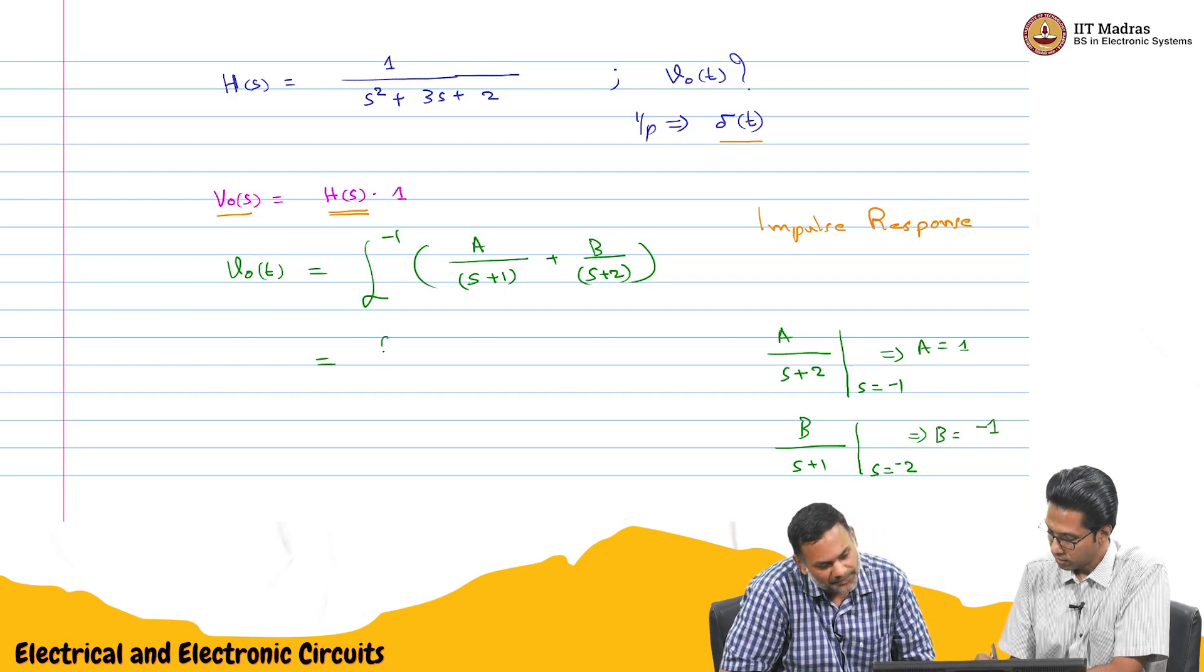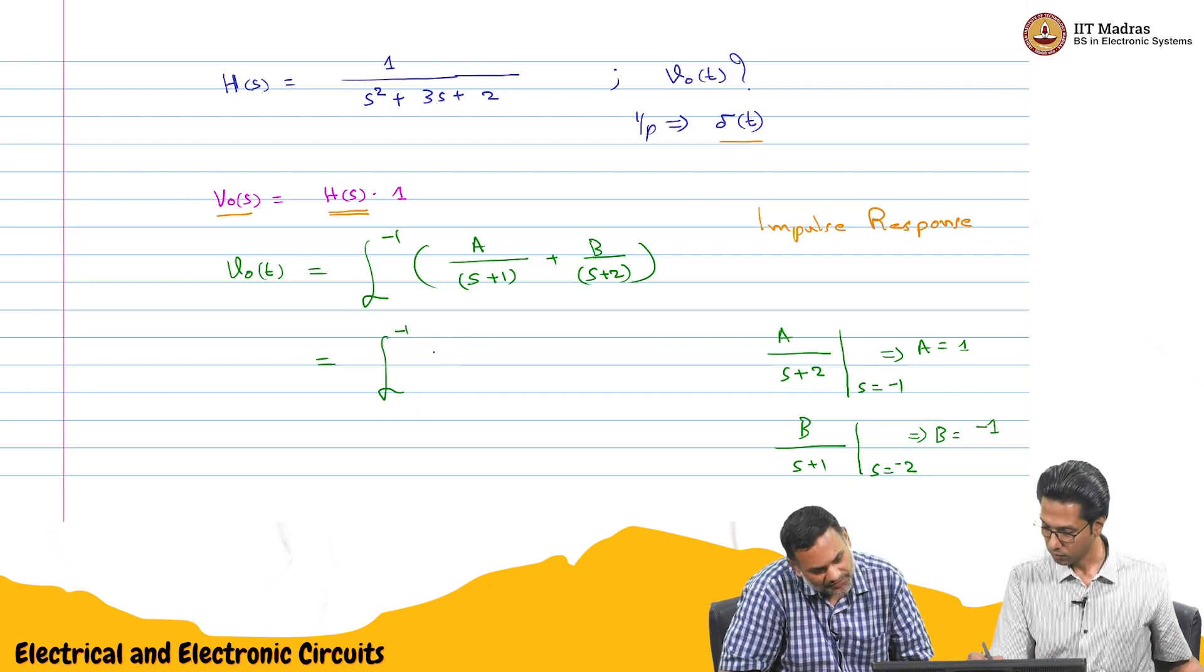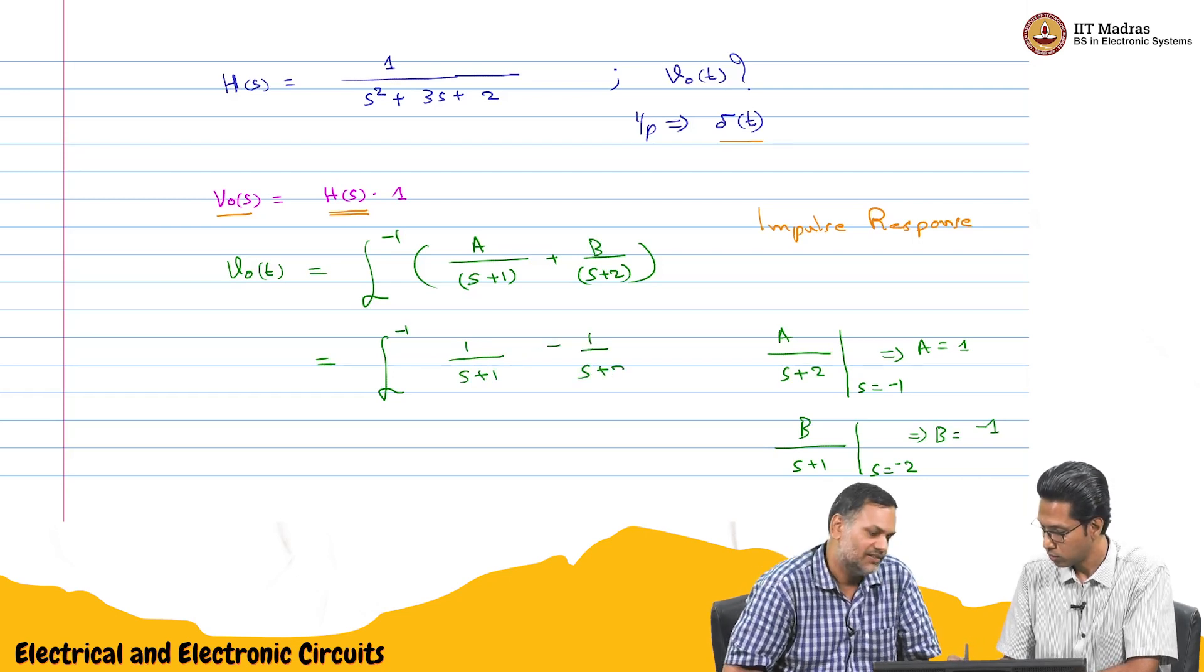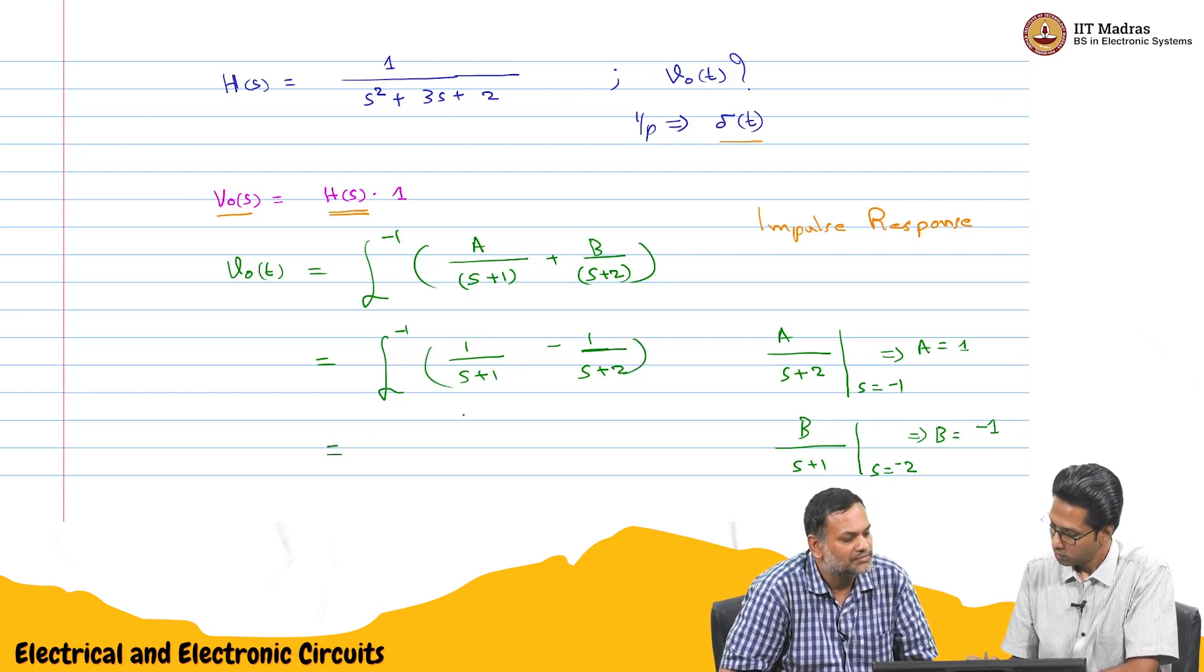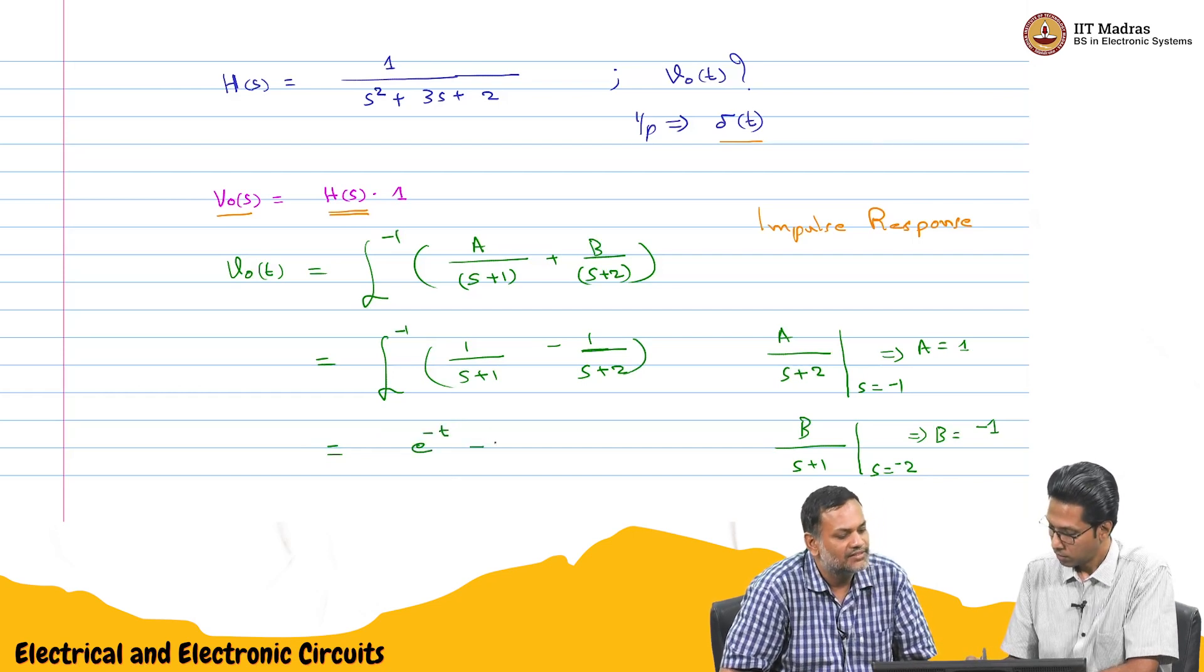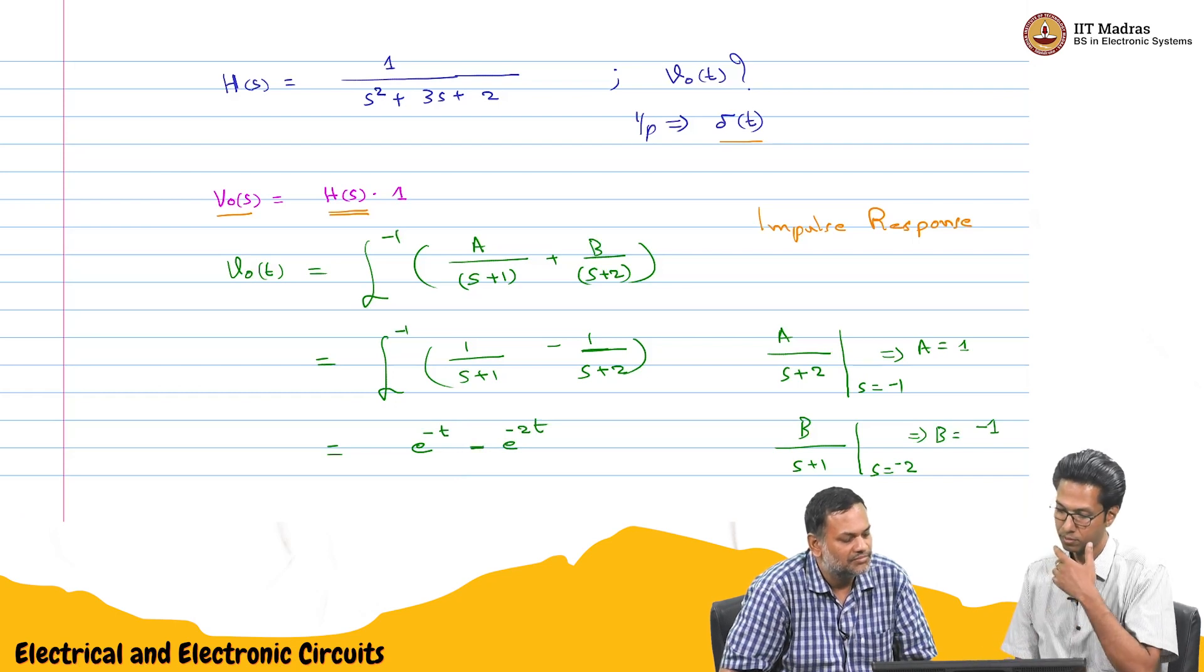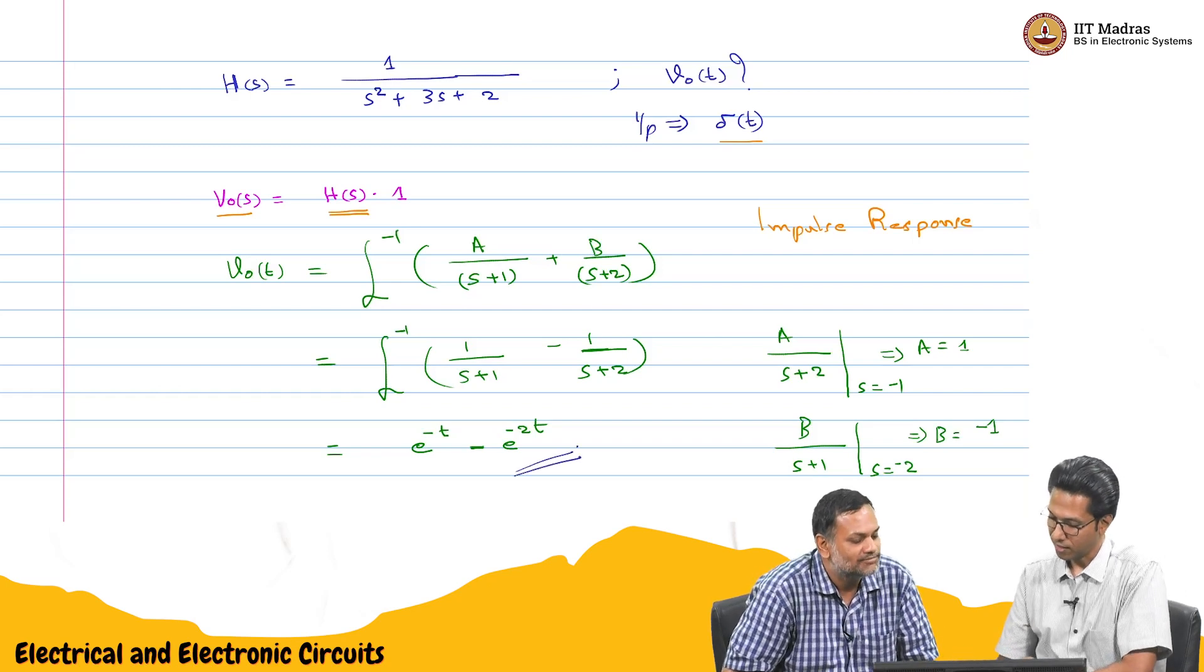So, that is just the Laplace inverse of 1 by s plus 1 minus 1 by s plus 2, which is e power minus t minus e power minus 2t. So, this is your output.